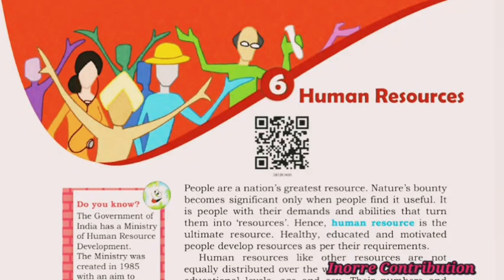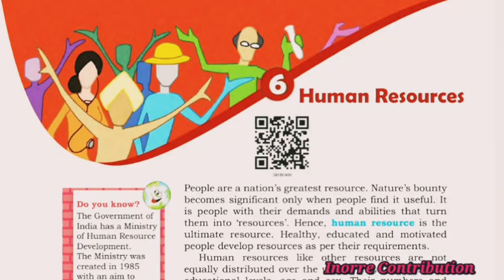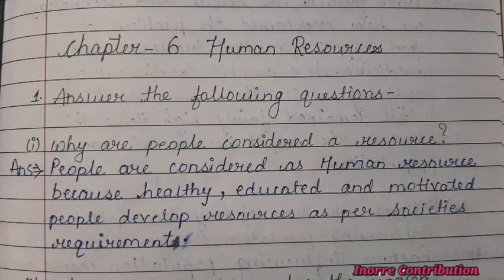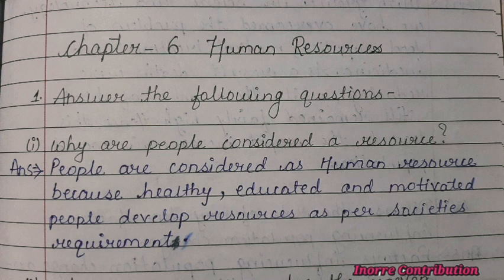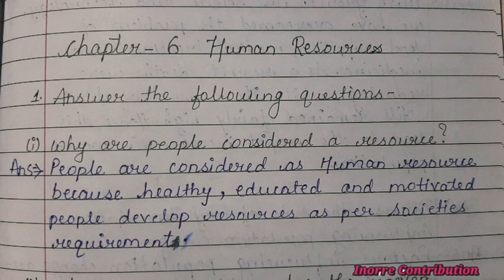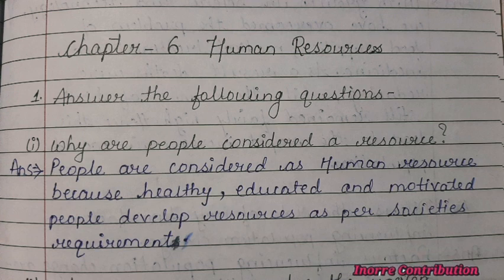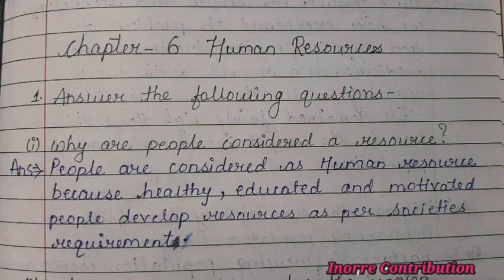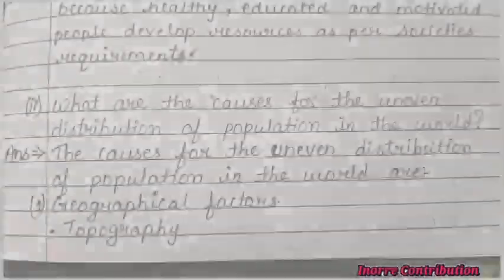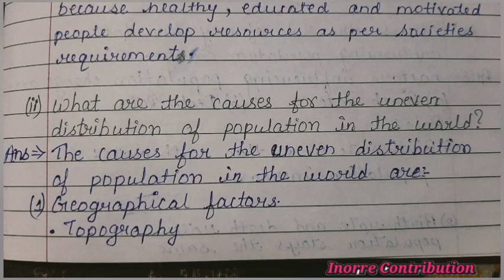Class 8 Social Science Geography, Chapter 6: Human Resources. Answer the following questions. First: why are people considered a resource? People are considered a human resource because healthy, educated and motivated people develop resources as per society's requirement.